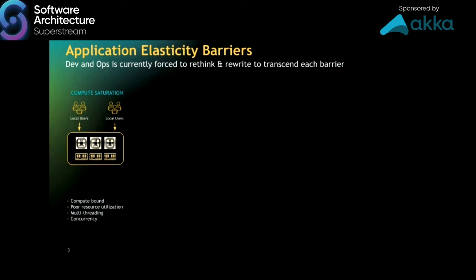I don't think elastic cloud infrastructure really translates to application elasticity. I see them as two different things that need to work in tandem. As developers, there are many barriers we can run into, and unless we think ahead, we might be forced to rethink and rewrite the application to transcend each one of these barriers. The first one — and this is very high level because I only have 30 minutes — is compute saturation, meaning IO being compute bound.